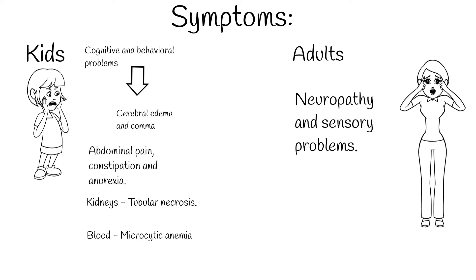The adult central nervous system is already developed. That is why lead poisoning causes different symptoms in adults — mainly neuropathy and sensory problems.